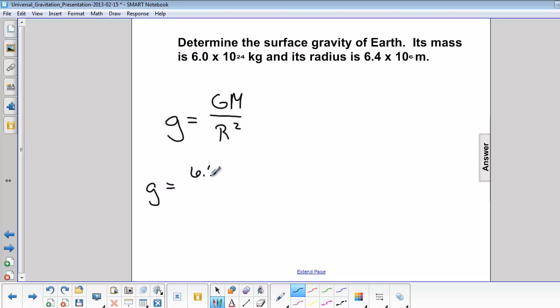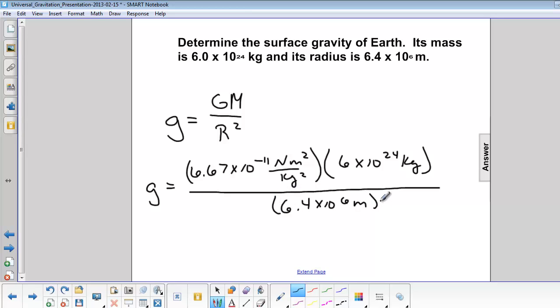Big G is 6.67 times 10 to the negative 11th Newtons meters squared over kilograms squared, times the mass of the Earth, which is 6 times 10 to the 24th kilograms, dividing by the radius of the Earth, 6.4 times 10 to the 6 meters squared.